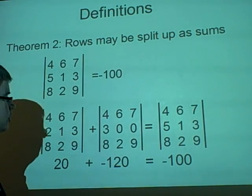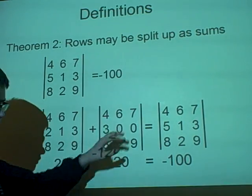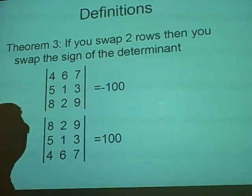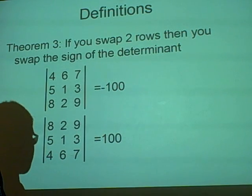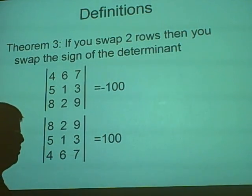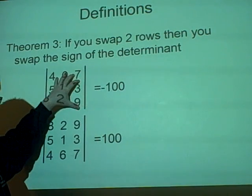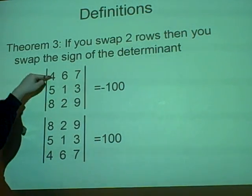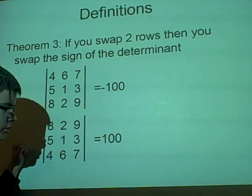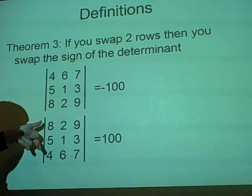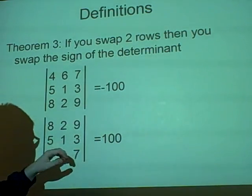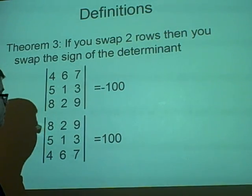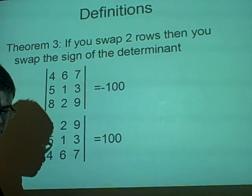Next one: if you swap two rows, then you swap the sign of the determinant. This one's quite simple to get your head around. So here we have our matrix again—we've swapped the last row and the first row. Remember, you can swap any rows. We swap them over, so we swap the sign. The determinant is now 100. And I tested this as well—that's right. Feel free to test them with any other matrices.